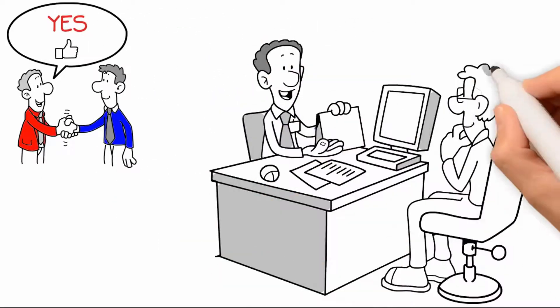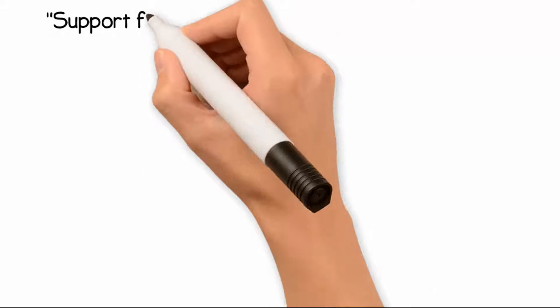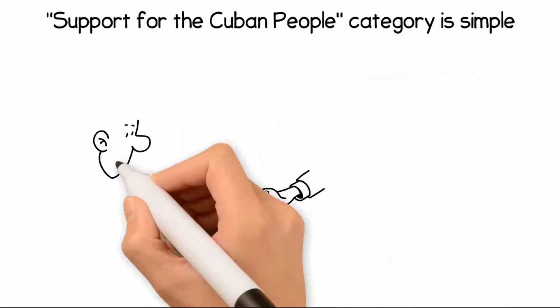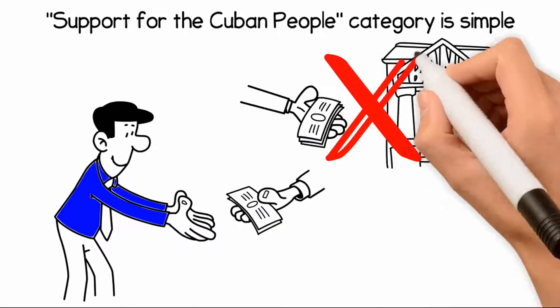For most Americans, the way to go to Cuba is the support for the Cuban people category. The idea behind this category is simple: the money American travelers spend goes directly into the hands of Cuban citizens, not the government.